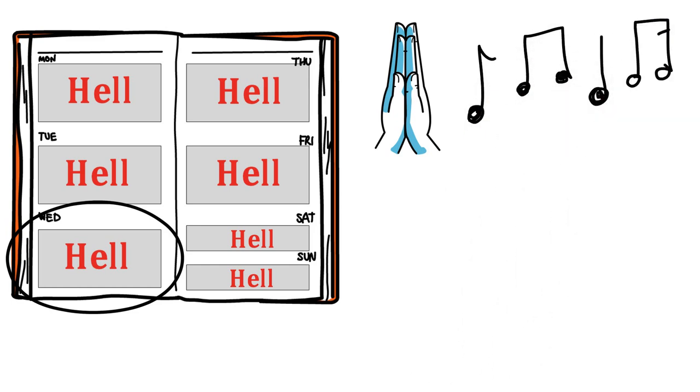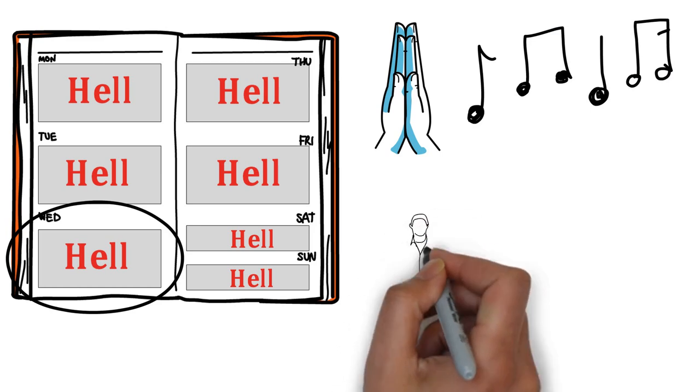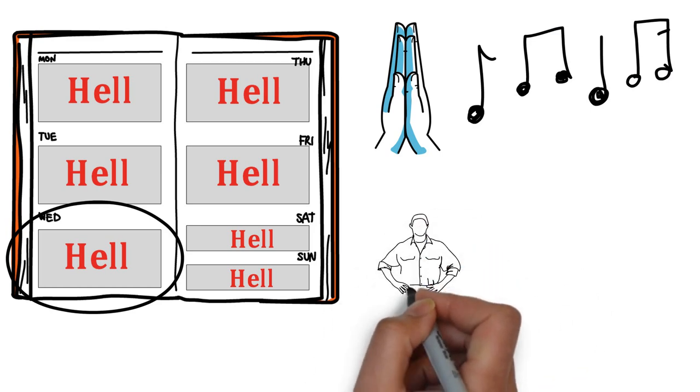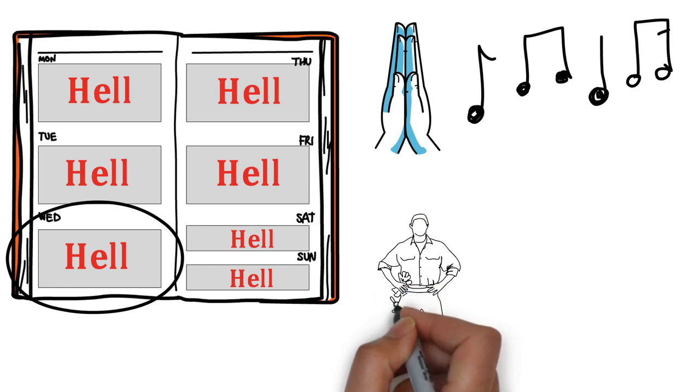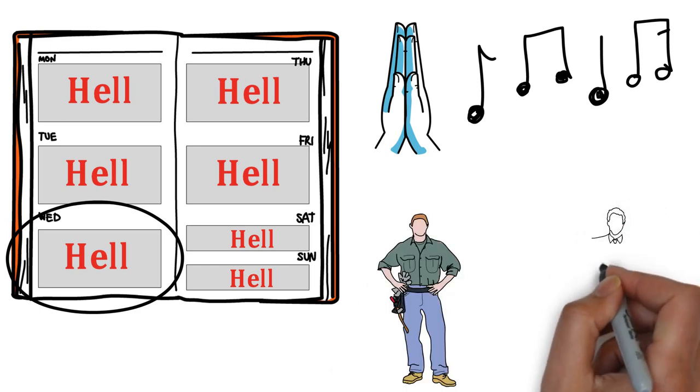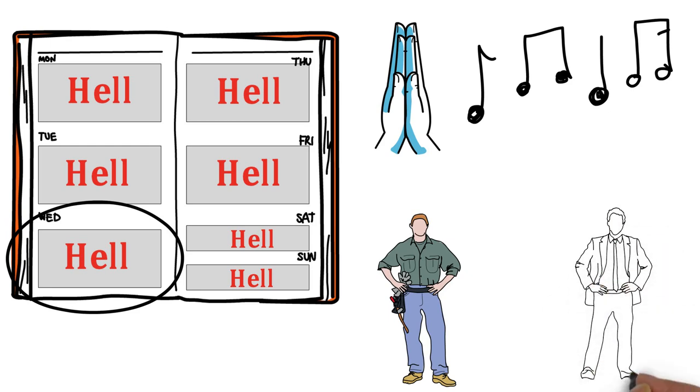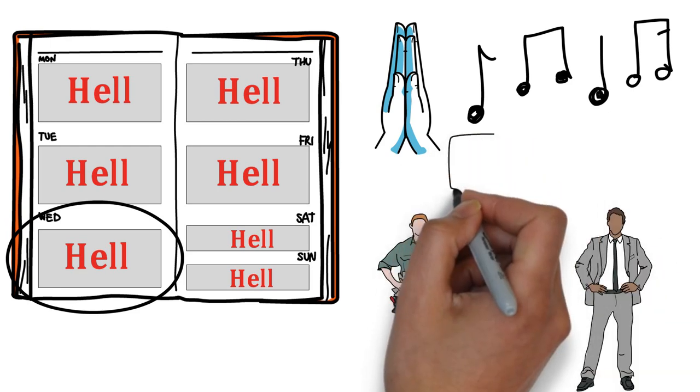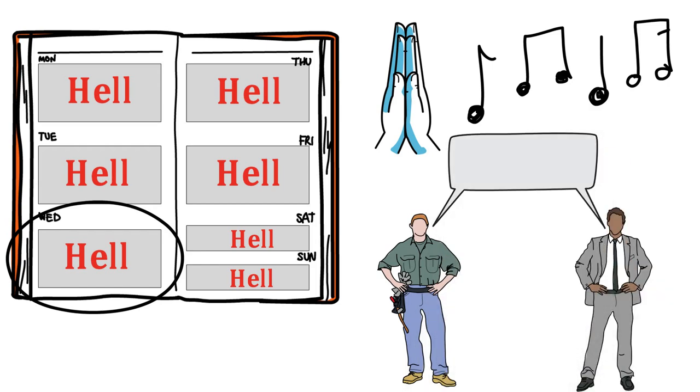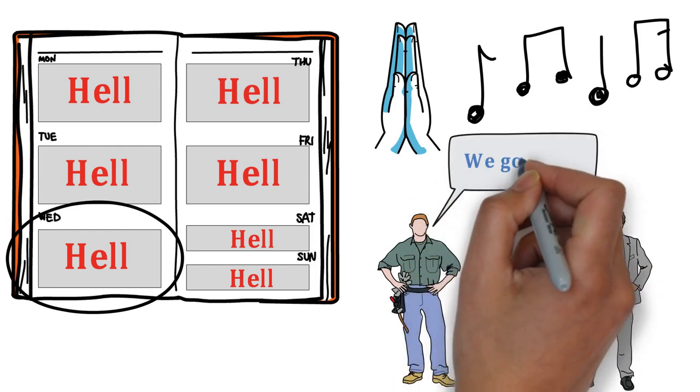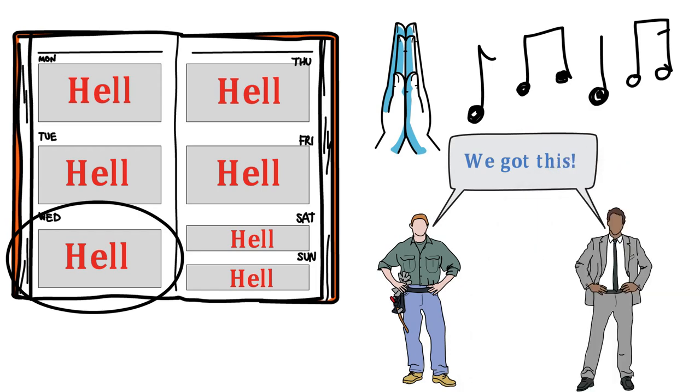One voice became two, and two became three, and then before long, everyone was singing. The SEAL trainees had learned an important lesson: the power of one person to unite the group, to inspire those around them, to give them hope. If that one person could sing while neck deep in mud, so could the rest of them. If that one person could hang on and persevere, so could the rest of them. Hope is the most powerful force in the universe. Sometimes all it takes is one person to make a difference and provide that hope.